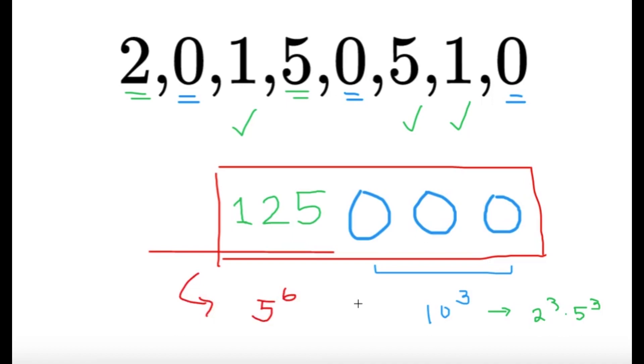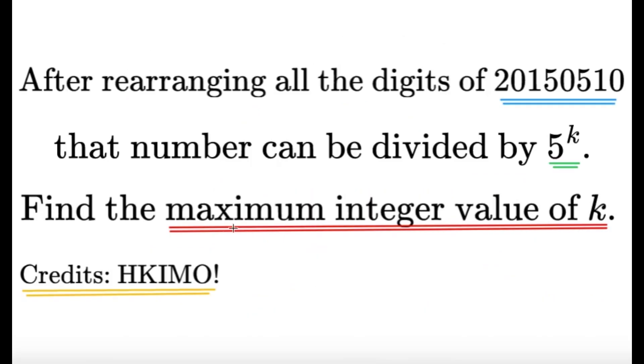And you can try it out. You can see that if you try to go through all other possible combinations, the maximum integer value of k is indeed 6.